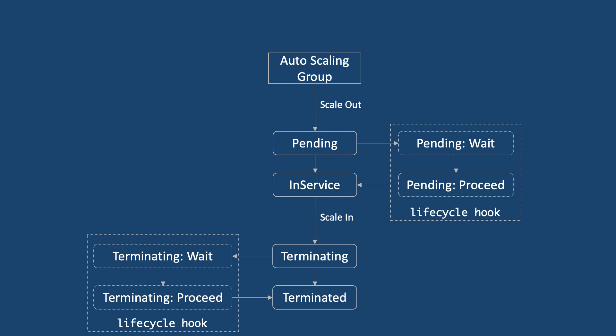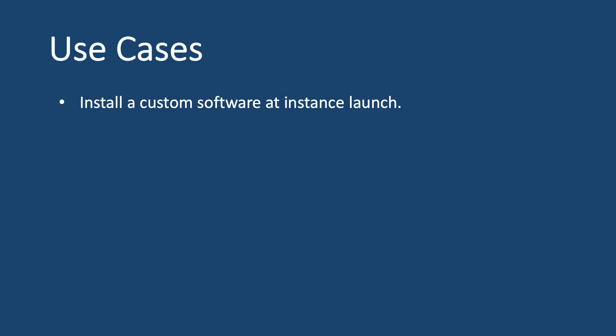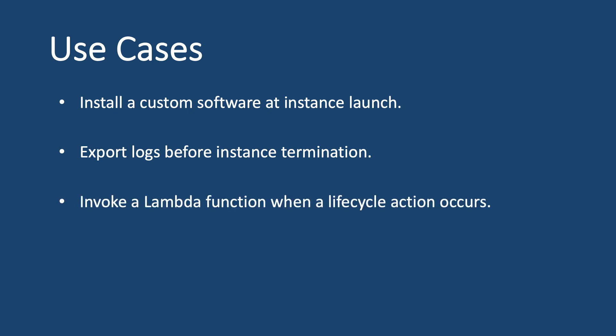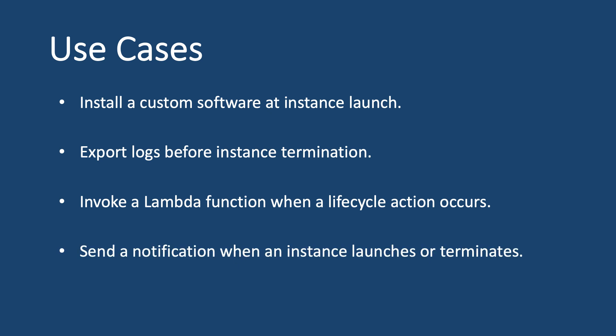Let's look at some use cases. A common use case is to install custom software at instance launch — maybe a monitoring software that you need installed before the instance starts serving traffic. Another use case is to export logs before the instance terminates. You can also invoke a Lambda function when a lifecycle action occurs, configure it to send a notification or email, or perform some other custom action. We could also use lifecycle hooks to run a custom script at instance launch, and that's the use case we're going to configure.